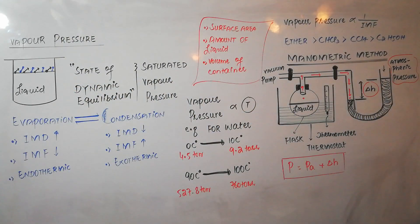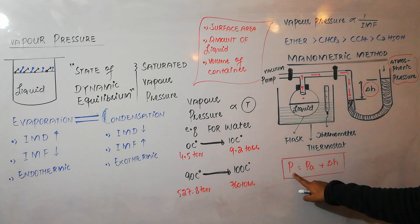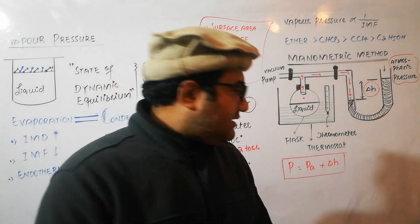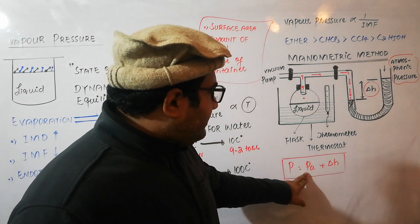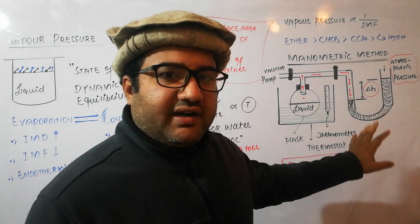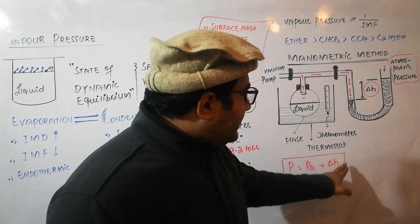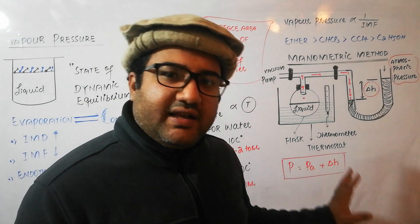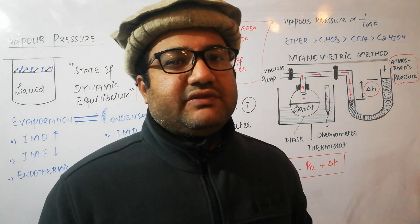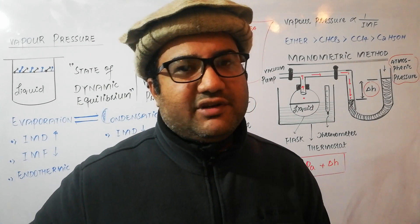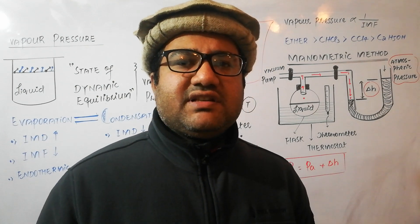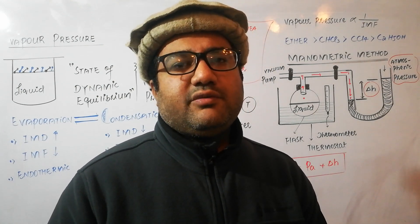We apply the formula: P = Pa + Δh, where P is the vapor pressure of the liquid, Pa is the atmospheric pressure, and Δh is the difference in height of mercury in the two limbs. From this formula, Δh provides the information about the vapor pressure of the liquid. This is the manometric method, a very famous and accurate method for measuring the vapor pressure of liquids.